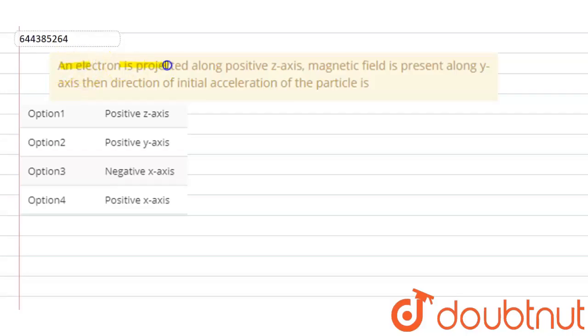An electron is projected along positive z-axis. Magnetic field is present along y-axis, and we need to find the direction of initial acceleration of the particle. This question is based on the chapter on magnetism. The electron is projected, which means the charge is negative.